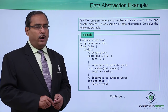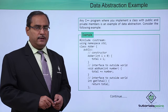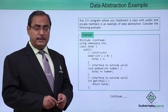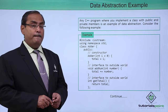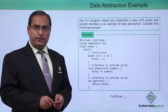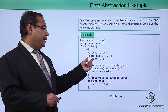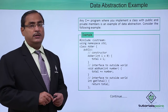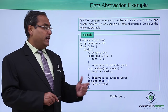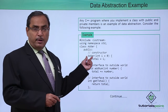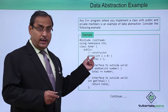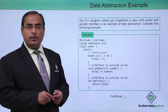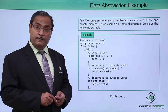A constructor can be of two types: a parameterized constructor and a non-parameterized constructor. A non-parameterized constructor does not have any input argument, while a parameterized constructor will have some input argument. Here, this constructor is having an input argument, so it is known as a parameterized constructor. If a constructor does not have any input argument, it is known as a non-parameterized or default constructor.